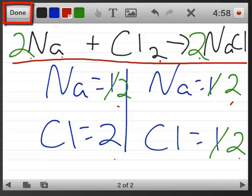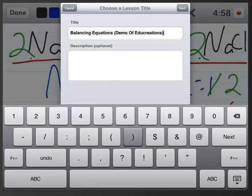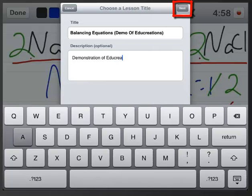So, now that I've recorded this tutorial, what do I do? Well, in the top left corner of my educreations screen is the done button. So, I'm going to tap that and I'm going to tap save lesson. I'm going to give it a title and then I can put a description here if I want to and tap next.